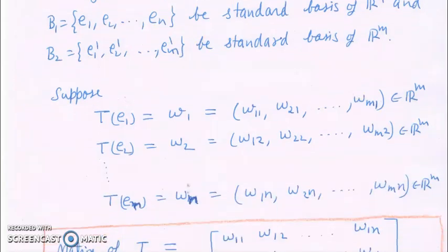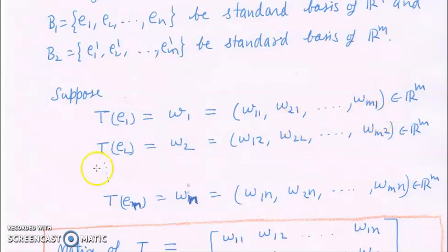Suppose T(e1): since e1 is an element of Rn and T is a linear transformation, T(e1) is an element of Rm. Call it w1, which can be written as a vector in Rm: w1 = (w11, w21, ..., wm1). Similarly, T(e2) = w2, written as (w12, w22, ..., wm2).